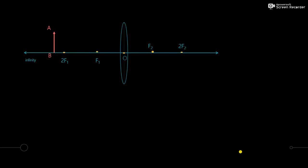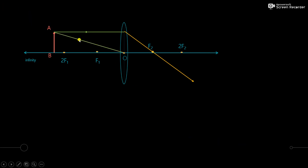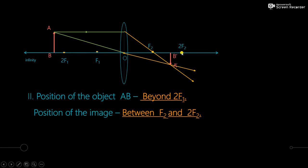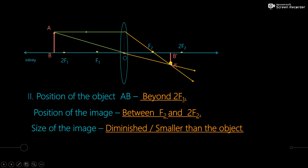Next ray diagram: the incident ray parallel to the principal axis follows rule 1 and passes through focus f2. The second ray touches the optical center and goes undeviated — rule 3. The convergence happens at A dash B dash and the image formed is inverted. The object has moved from infinity to between infinity and 2f1. Image is between f2 and 2f2. Size of the image is diminished, smaller than the object. Nature of the image is real and inverted.